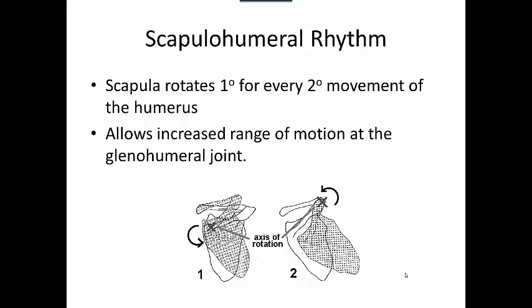If we did not have any scapulohumeral rhythm or any scapular motion, we would ABduct our glenohumeral joint to about 90 degrees and our greater tubercle would hit our acromion process, and that would limit our range of motion. But we have this whole other movement of the scapula that basically assists the glenohumeral joint.